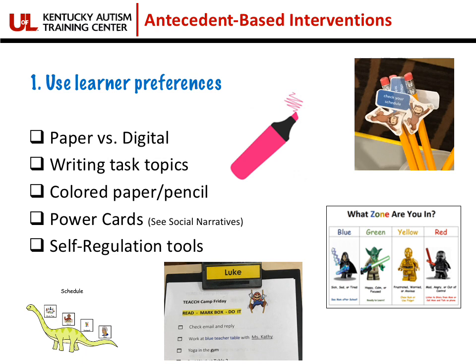I had a student who, if you gave her a pencil, she wouldn't write very much, but if you gave her a purple marker, she would write anything you asked her to. There's a strategy called power cards that incorporates student interest as a social regulation resource. I encourage you to check out social narratives, which are one of those evidence-based practices, for more information on power cards. You can also incorporate student interests into self-regulation tools such as their zones of regulation or their visual cues throughout the day.